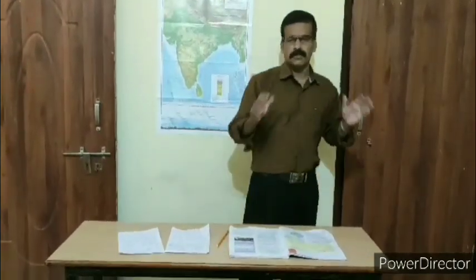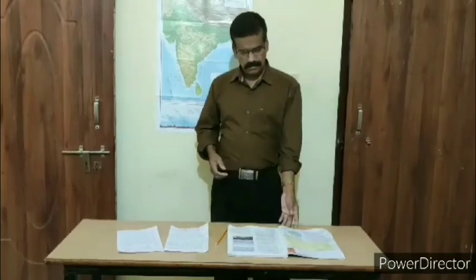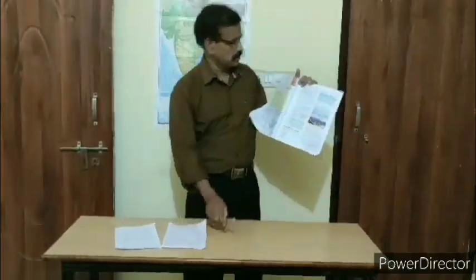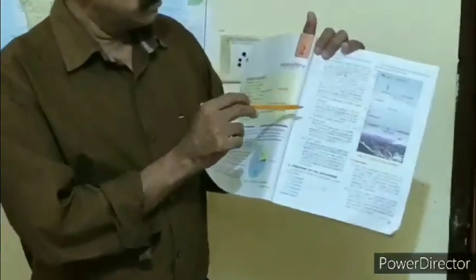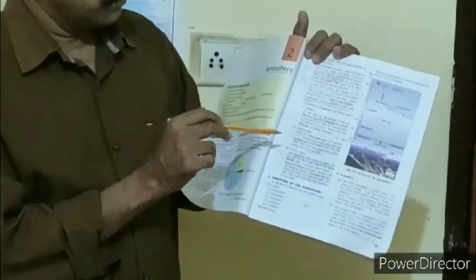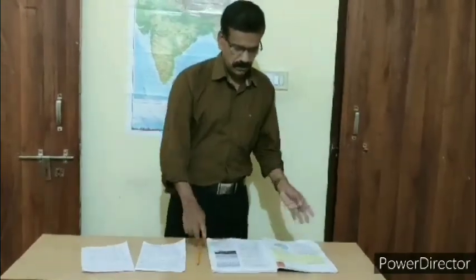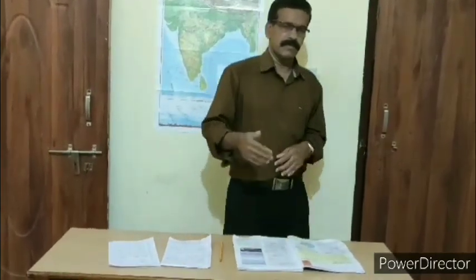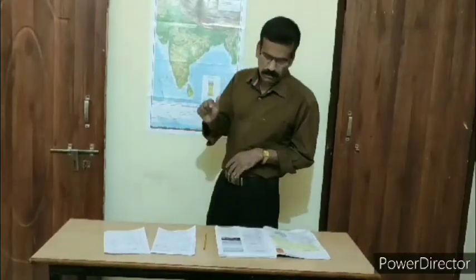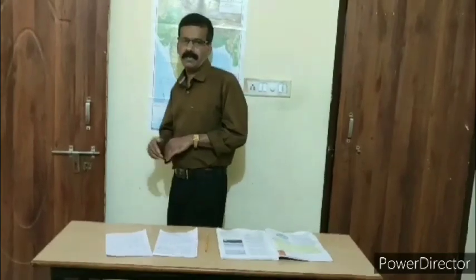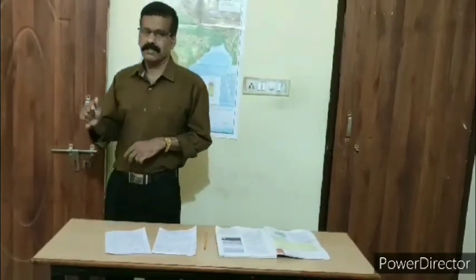There are three factors affecting the atmosphere. The first one is altitude, the second is temperature, and the last one is water vapor. Air pressure decreases with increase in height at the rate of one centimeter for every 110 meters.